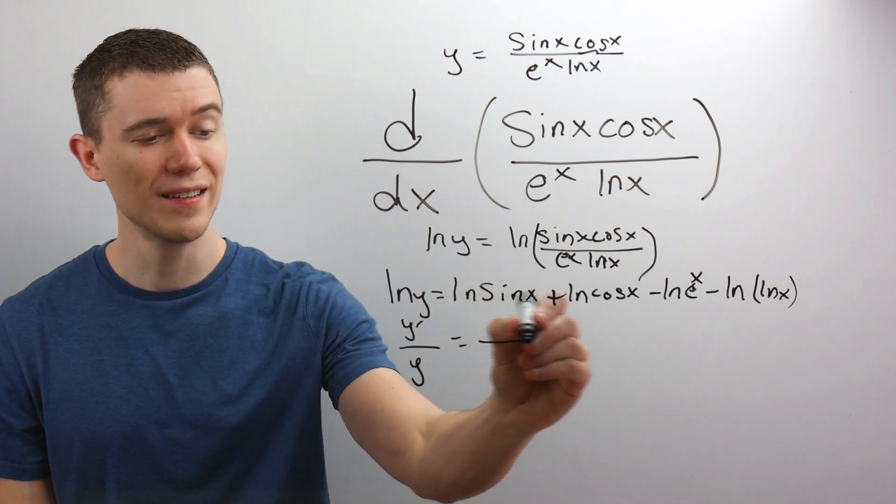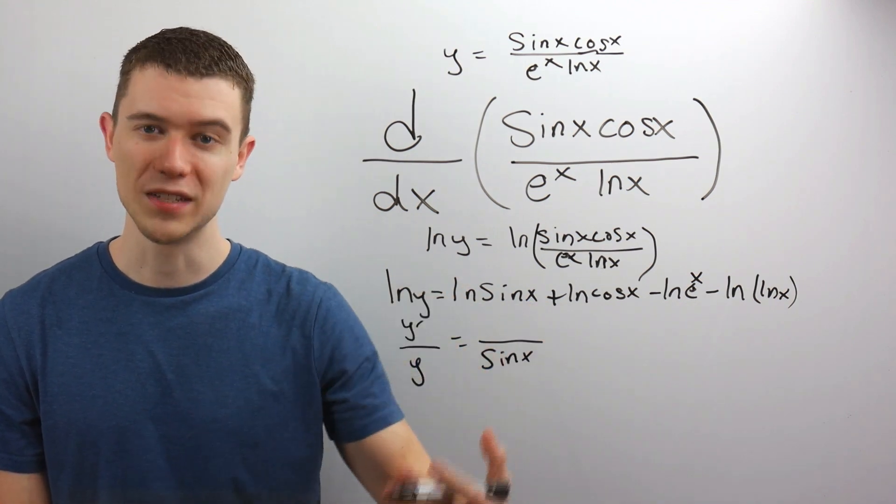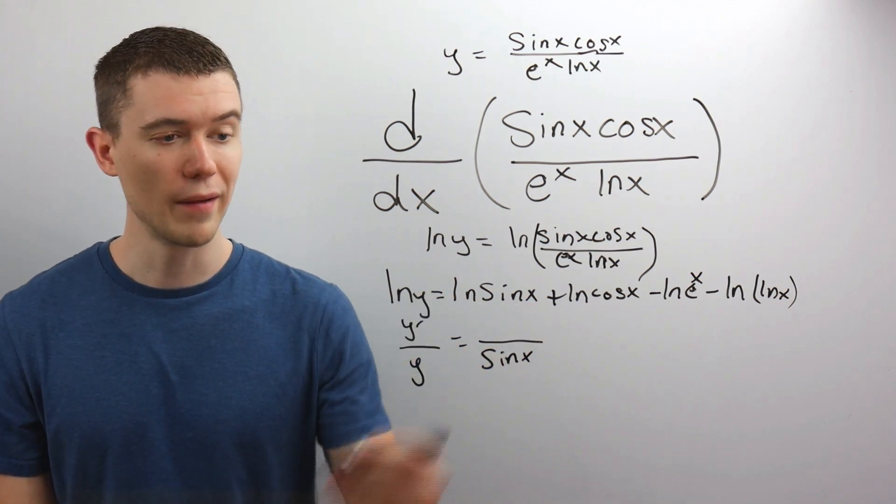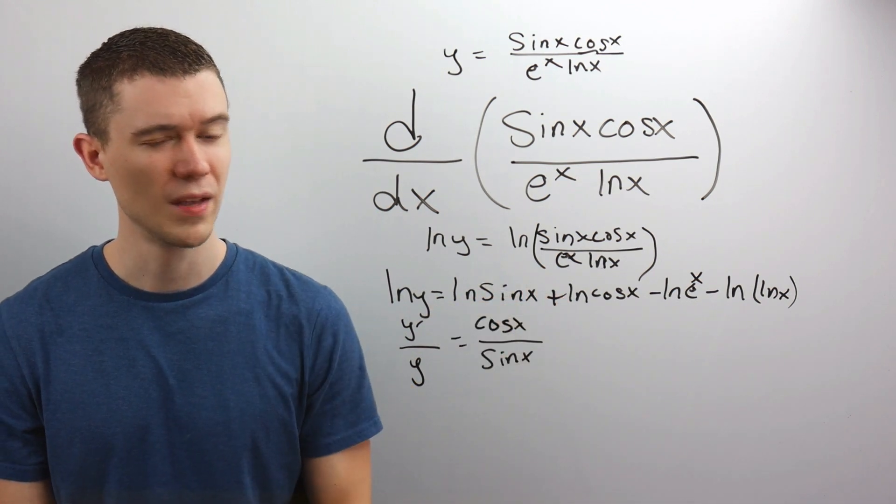I'm going to actually be able to take these derivatives following this same rule. The derivative of natural log sine. Throw the sine on the bottom. The derivative of sine goes on the top. What's the derivative of sine? Last time I checked, that's cosine. Let's keep going.